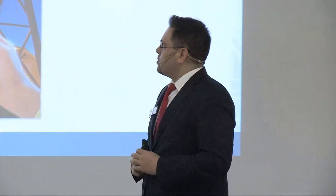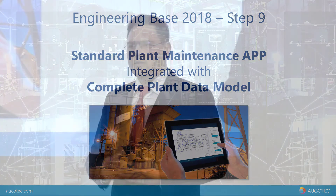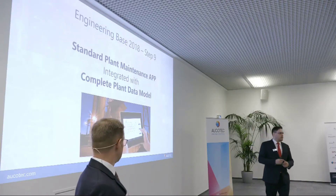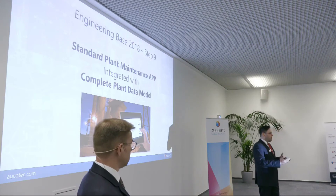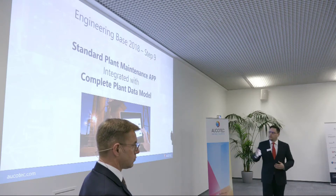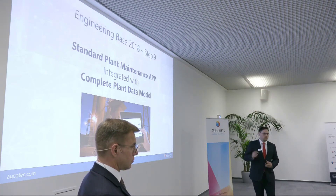Step nine is the standard plant maintenance app. We are releasing a maintenance app covering all normal activities of a maintenance person — they can go to the plant, scan a QR code, see maintenance tasks from Engineering Base (normal, eruptive, or sudden tasks), and access the complete plant data model on a tablet without needing a computer or printing anything. This will be released with EB 2018.